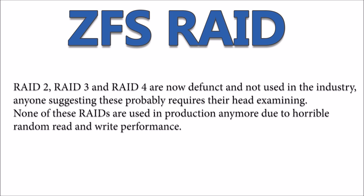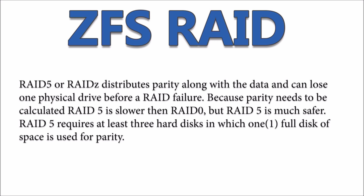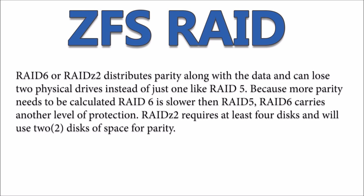Let's look at RAID 2, RAID 3, and RAID 4. We do hear about these, but we do not recommend them — they're obsolete and we tell customers to stay away from them. Now RAID 5, also known as RAID Z: it distributes parity along with the data, and you can lose one drive and be able to recover that information. You need at least three hard drives, and one full disk is used for parity. RAID 6 is similar to RAID 5 except you can lose two drives as opposed to one.